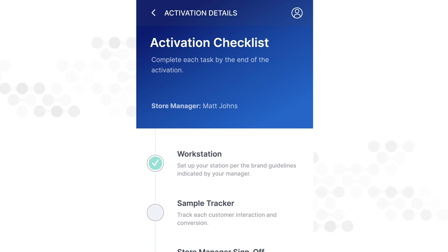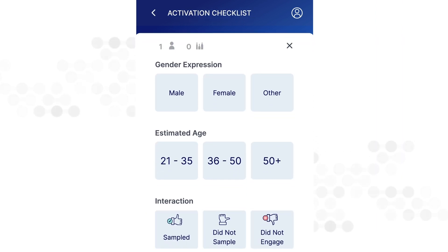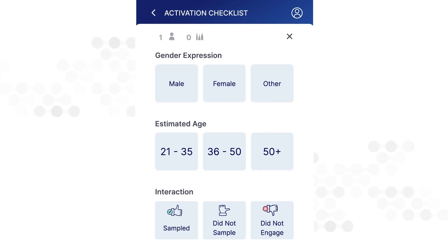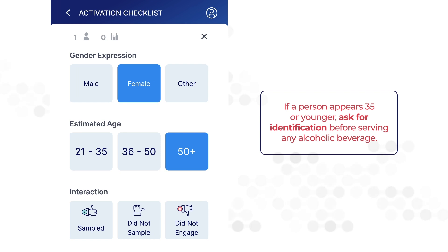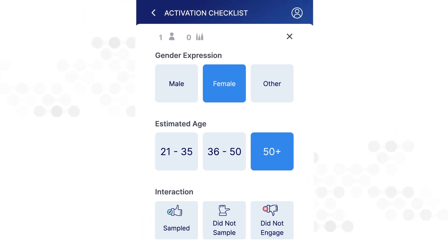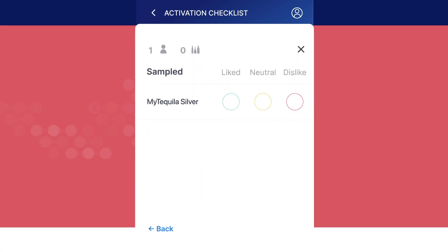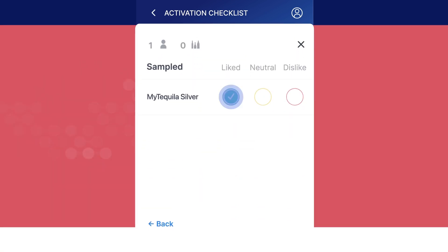When you're ready to begin, tap sample tracker. For every customer that walks in the store, complete a form noting their gender and age range — do not ask, rather guess to the best of your ability. If a customer appears 35 or younger, ask for identification before serving any alcoholic beverage. For each customer, indicate if they sampled, did not sample, or if you did not engage with the customer. For customers who sampled, indicate whether they liked the product, disliked it, or were neutral.